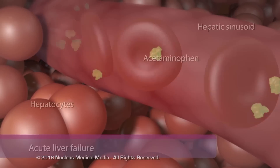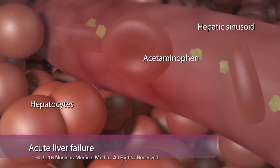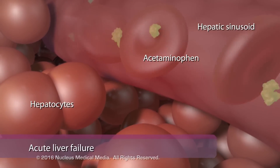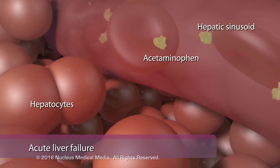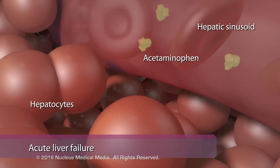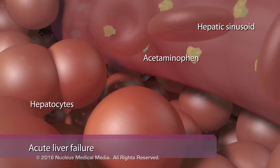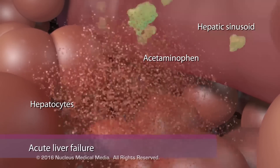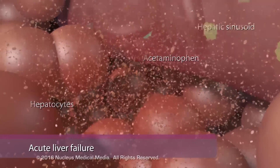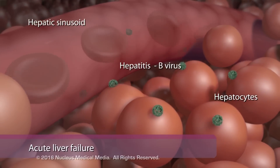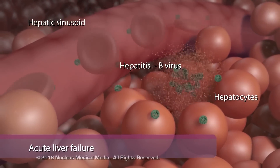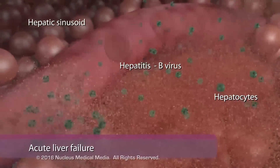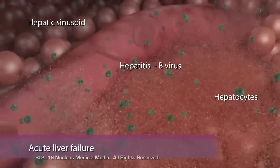Acute liver failure is less common than chronic liver failure. Common causes of acute liver failure are poisoning, such as an overdose of acetaminophen or other medications, or acute infection with hepatitis A or B, which rapidly kills hepatocytes.